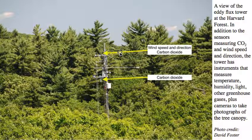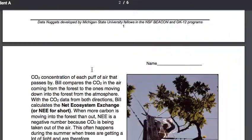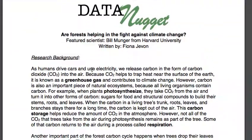So here's his eddy flux tower. It basically shows wind speed and can measure puffs of air coming up or down, and see about the air coming off the forest — how much carbon dioxide is in it — and the air coming down from the sky, how much carbon dioxide it's using. So he set up this scientific experiment on how it works, and we're going to go through some of the data from Bill today in this Data Nuggets lab.